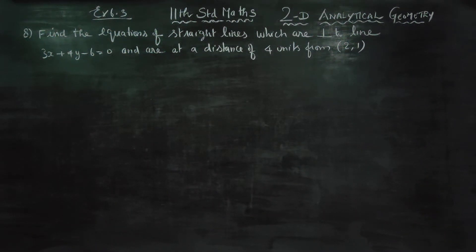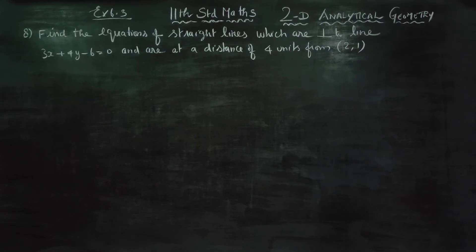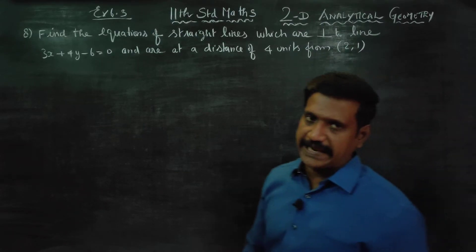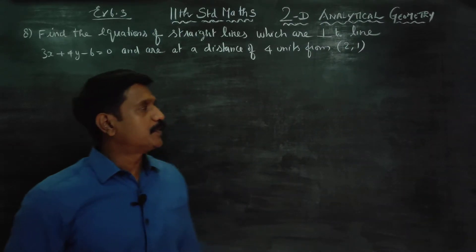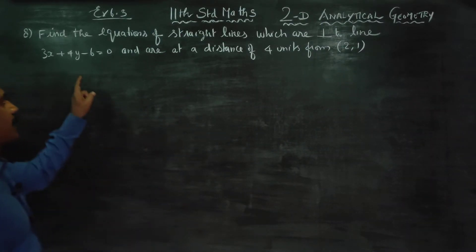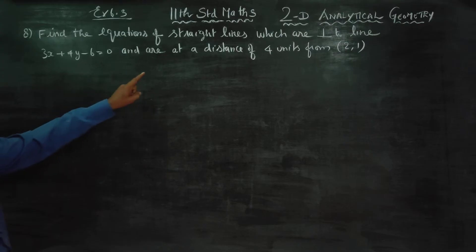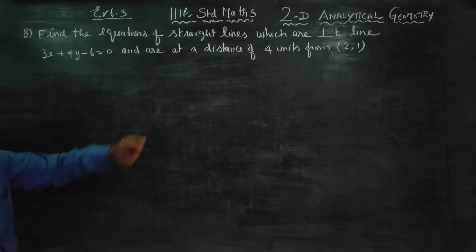Dear 11th standard students, in exercise number 6.3, sum number 8: find the equation of the straight line which is perpendicular to the line and at a distance of 4 units from the point (2,1).